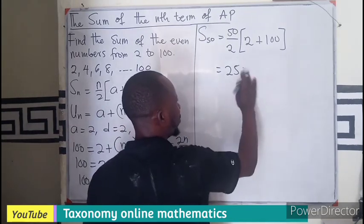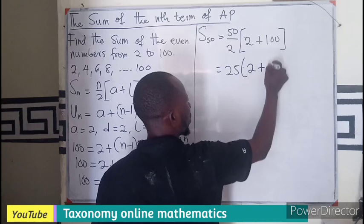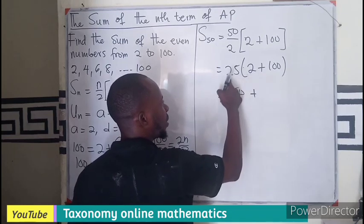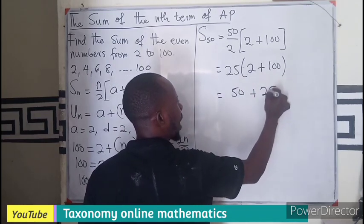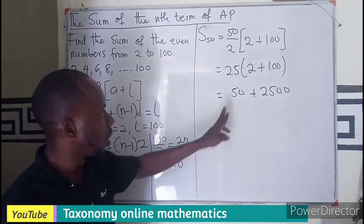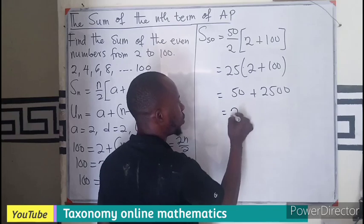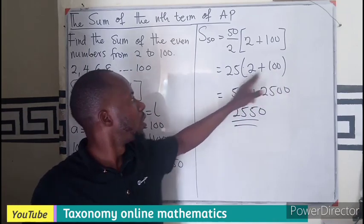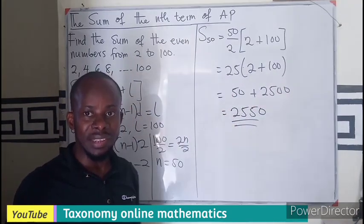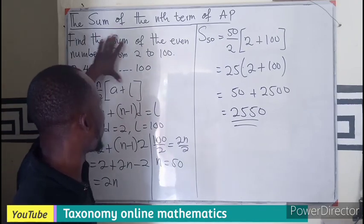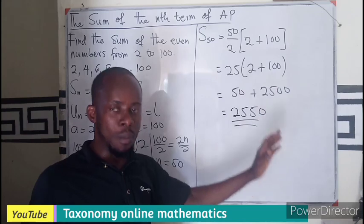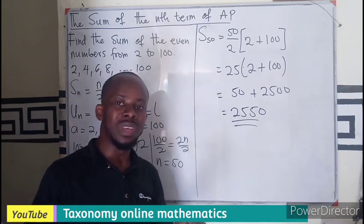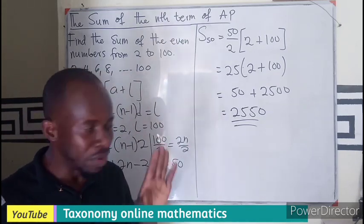But if I like, I can still maintain this to be 2 plus 100. If I multiply 2 by 25, I get 50. 25 times this will be 2,500. So now I can add this to have 2,550. Meaning, if you were to add this, you get 102 times 25. When you multiply, you still get the same thing. So it means that the sum of all even numbers from 2 to 100 or between 1 and 101 is going to be 2,550, the sum of all of them.